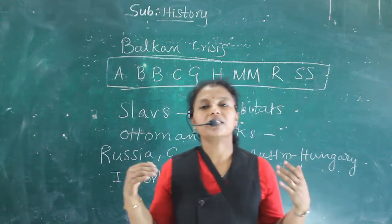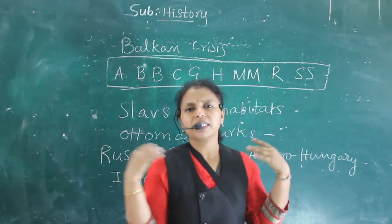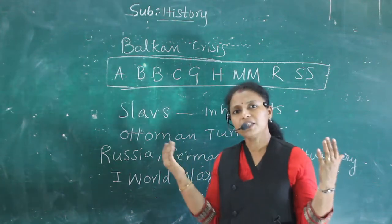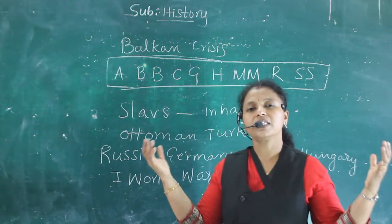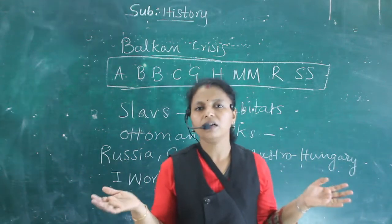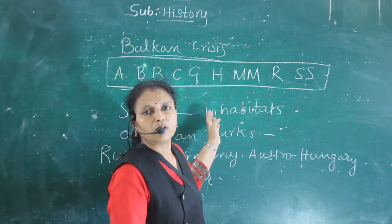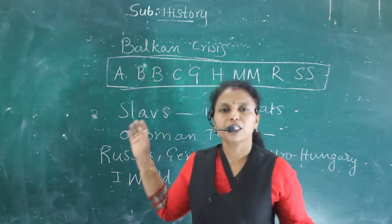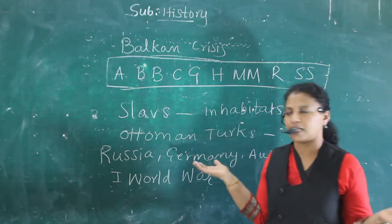The Ottoman Empire was a large empire with large territorial expansion. Every state became its own independent nation. The Ottoman Empire disintegrated, which caused these Balkan regions to also separate and become independent states, becoming free from the Balkan area as independent states.